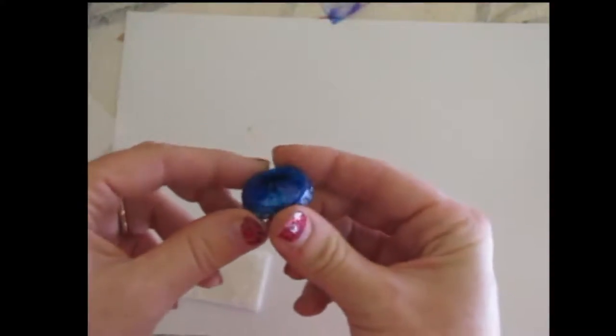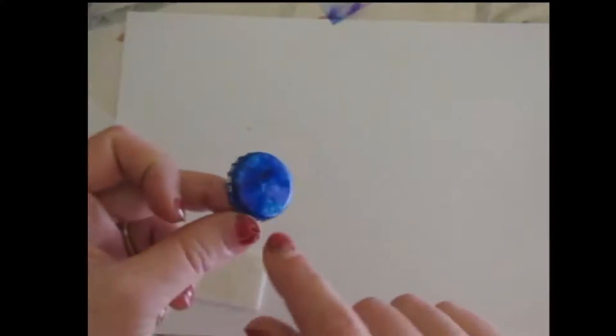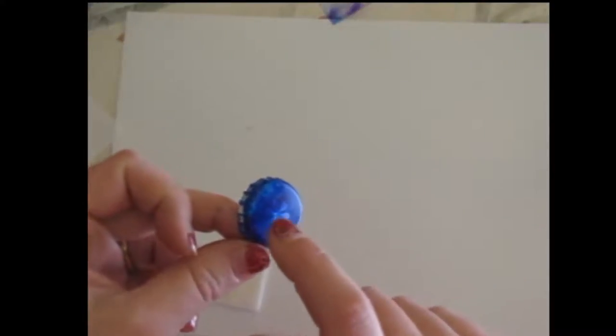Here we have a bottle cap. And one of the things we like about alcohol inks too is they dry quickly and they also keep that nice kind of shiny texture.